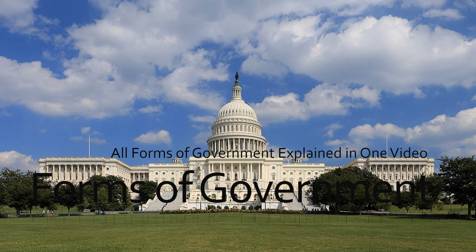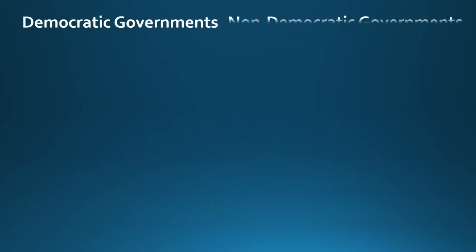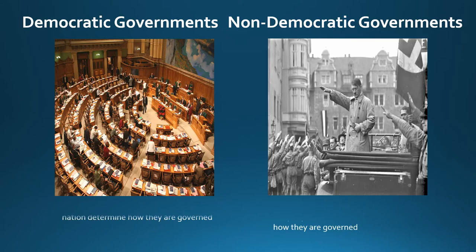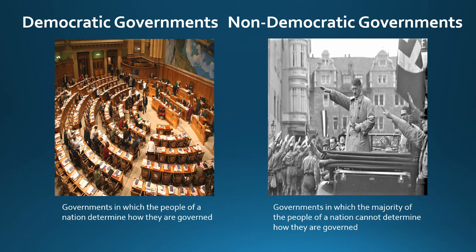Welcome to this video exploring all common forms of government. Practically every type of government in the world can be classified into two categories: democratic and non-democratic governments. Democratic governments are those in which the people of a nation determine how they are governed, while non-democratic governments are those in which the majority of the people cannot determine how they are governed. We will start with democratic governments.